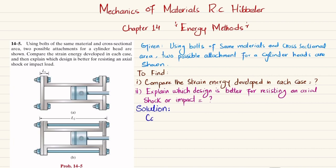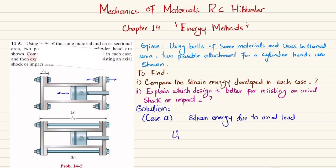For case A, you can see due to the movement of this piston there will be shock or axial load in this bolt, and the bolt experiences tensile stress or axial stress. We know that strain energy due to axial load can be represented as Ui.